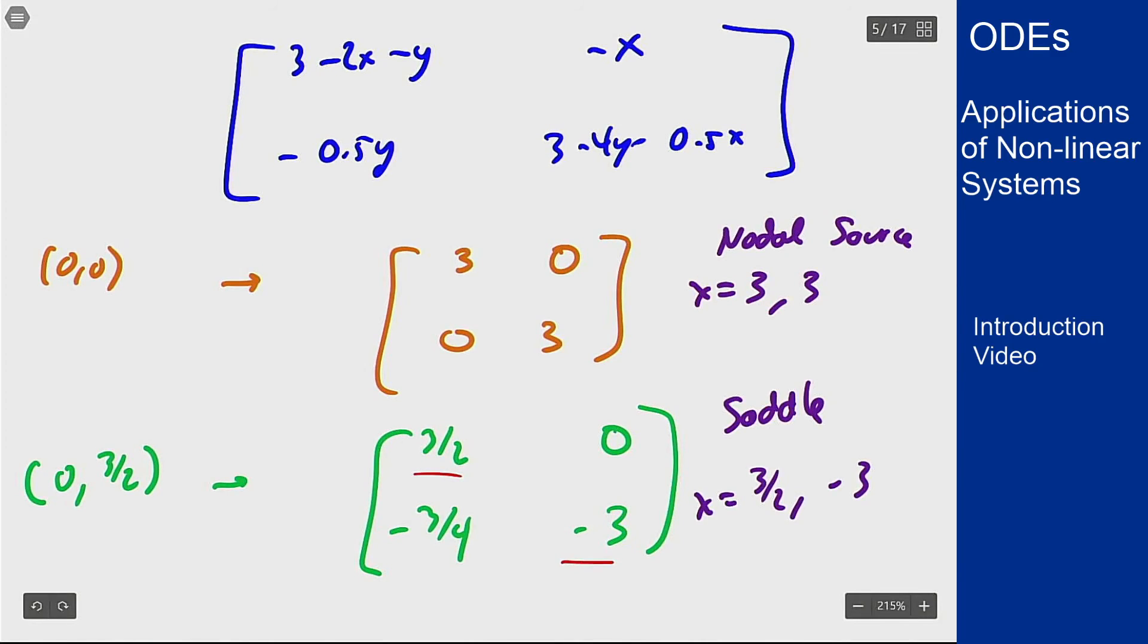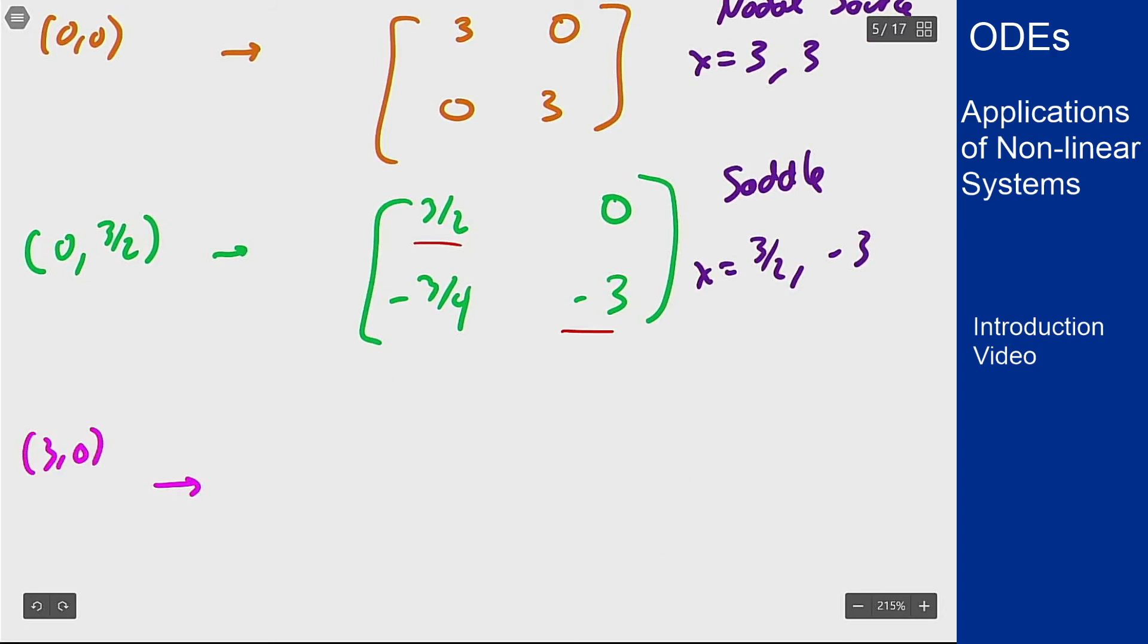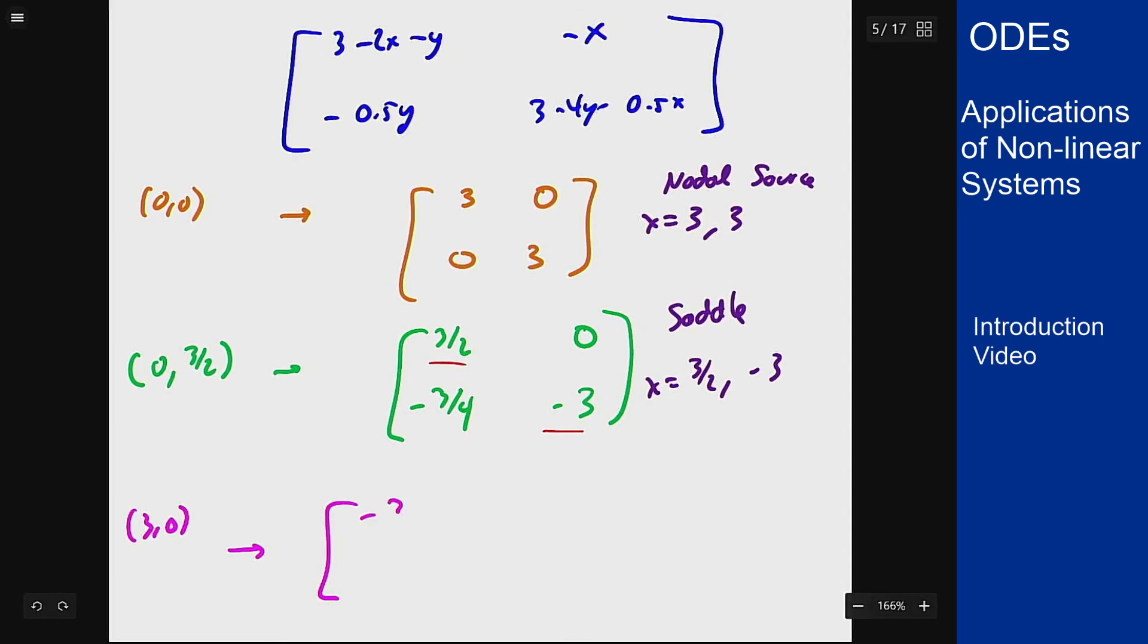So the next point at (3, 0), I'm going to get -3, -3, 0, and 3 minus 0 minus 1.5 is 3/2. This is again a saddle with lambda being again 3/2 and -3.